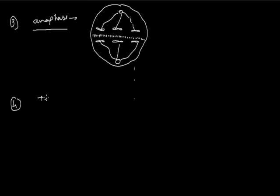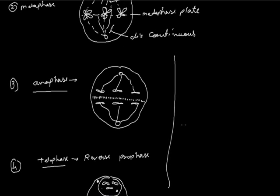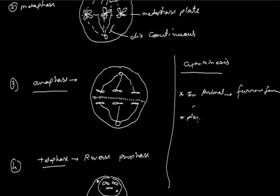The last phase is telophase, which is also called the reverse-flow phase. In telophase, the nuclear membrane and the nucleolus begin to reappear, and the centrioles remain at opposite poles. That is the process of karyokinesis. Now, the process of cytokinesis means division of cytoplasm. In animals, cytokinesis occurs by the process of furrow formation. But in plants, cytokinesis is done by the help of cell plate formation.